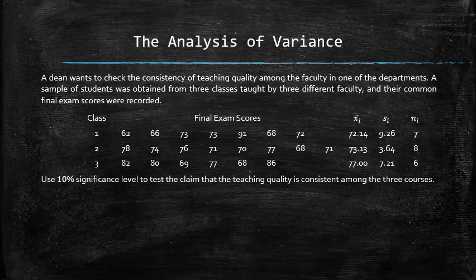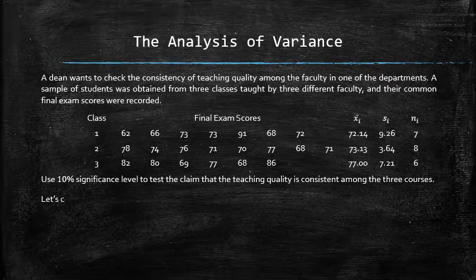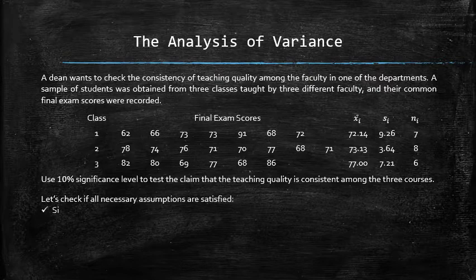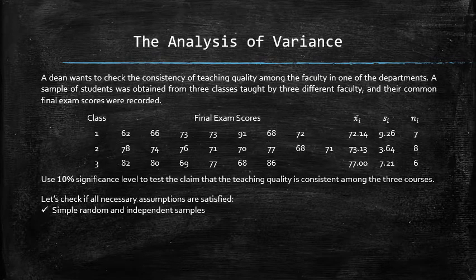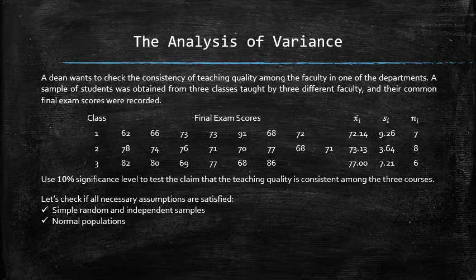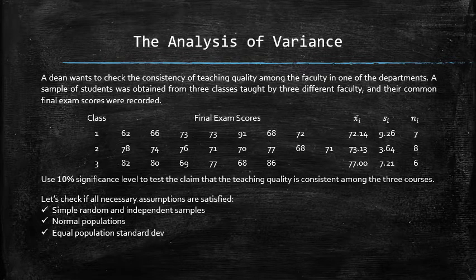Before we begin the ANOVA procedure, let's check if all necessary assumptions are satisfied. The samples must be assumed simple, random, and independent. If not, then the results of the test are invalid. Populations must be assumed normal, and they must have equal population standard deviations.